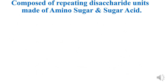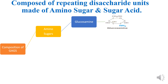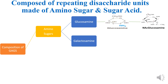GAGs are composed of repeating disaccharide units made of an amino sugar and a sugar acid. Amino sugars are of two types: glucosamine, derived from glucose, and galactosamine. The structure of glucosamine and galactosamine are shown, and galactosamine may also be acetylated.